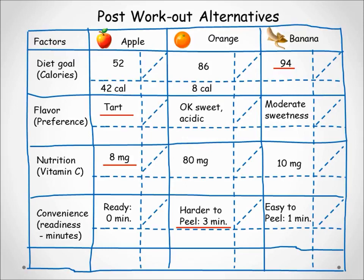In the nutrition factor, the banana and the orange have a 2-milligram and a 72-milligram advantage respectively over the apple. In the convenience factor, the banana and the apple have a 2-minute and a 3-minute advantage respectively over the orange.